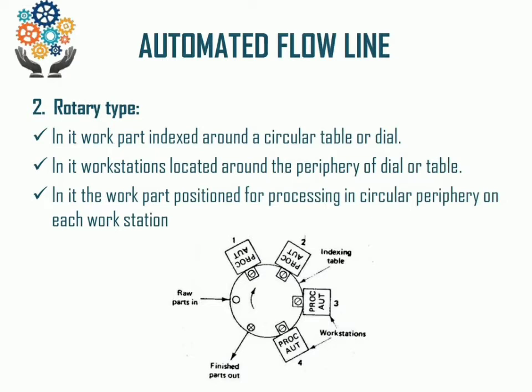In the rotary type, the work part moves from one work station to another work station in a rotary manner. This type of Automated Flow Line is implemented where the shop floor space is very limited and the work part size is very small — in that condition, the rotary type is suitable.